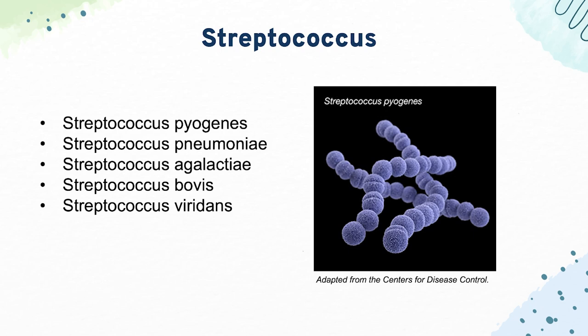Next, we have Streptococcus agalactiae, which is known for causing neonatal meningitis. Next, we have Strep bovis, which causes endocarditis in the context of patients who have colon cancer. And finally, we have Strep viridans, which causes endocarditis in the context of patients who often just had a dental procedure.